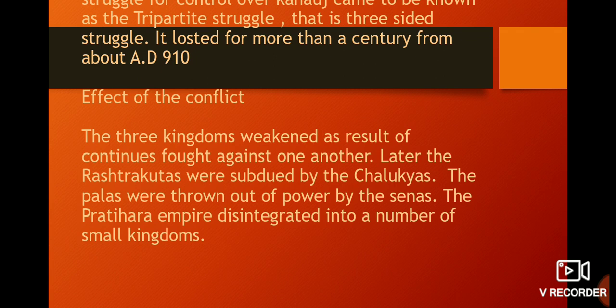Topic 2: Main events — the three-party struggle for Kanauj. The Palas, the Pratiharas, and the Rashtrakutas made Kanauj the center of their political power. The struggle for control over Kanauj came to be known as the three-party struggle, that is, a three-sided struggle.